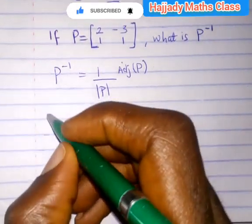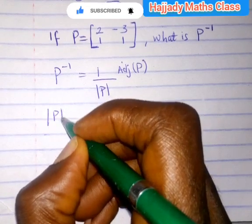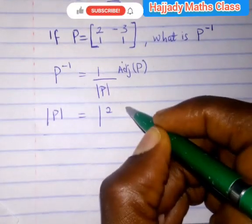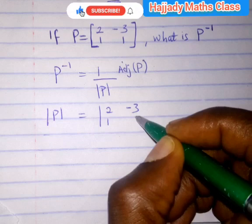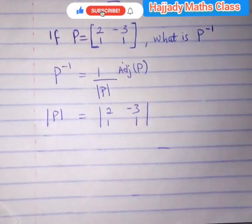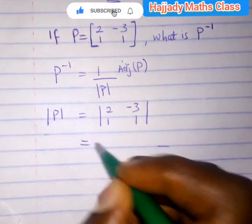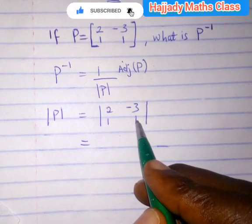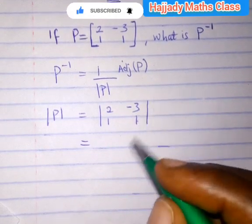So finding the determinant of this matrix P, we have 2, minus 3, 1, 1.